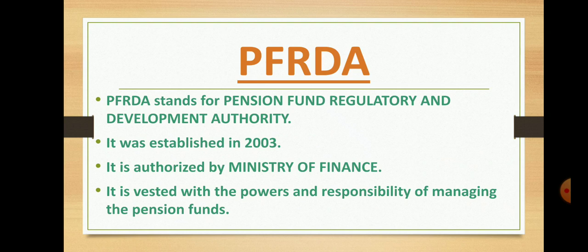Within the securities exchange, there are three types of groups: investors, security issuers, and intermediaries. Whether dealing in equities, bonds, shares, or other forms of securities, there are three groups — investors, the security issuers who issue securities, and intermediaries who act as a link between investors and security issuers. SEBI is authorized by the Ministry of Finance.